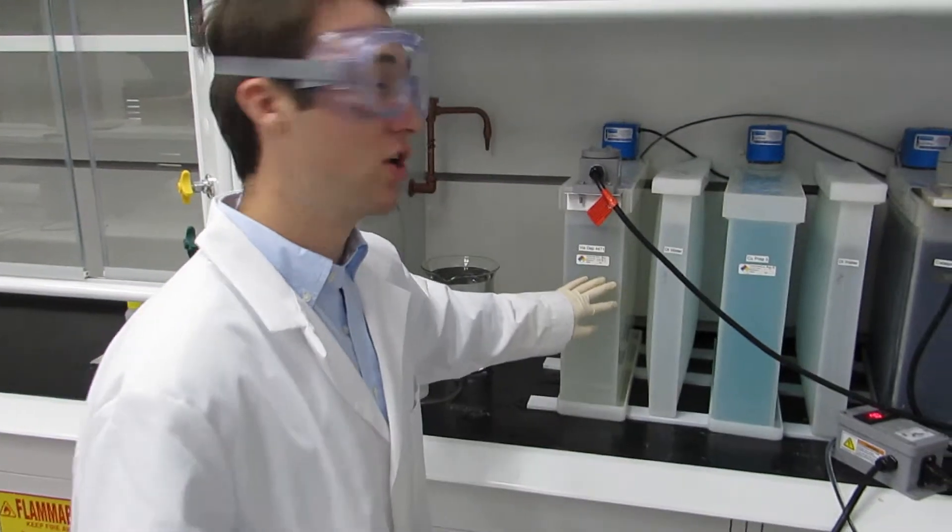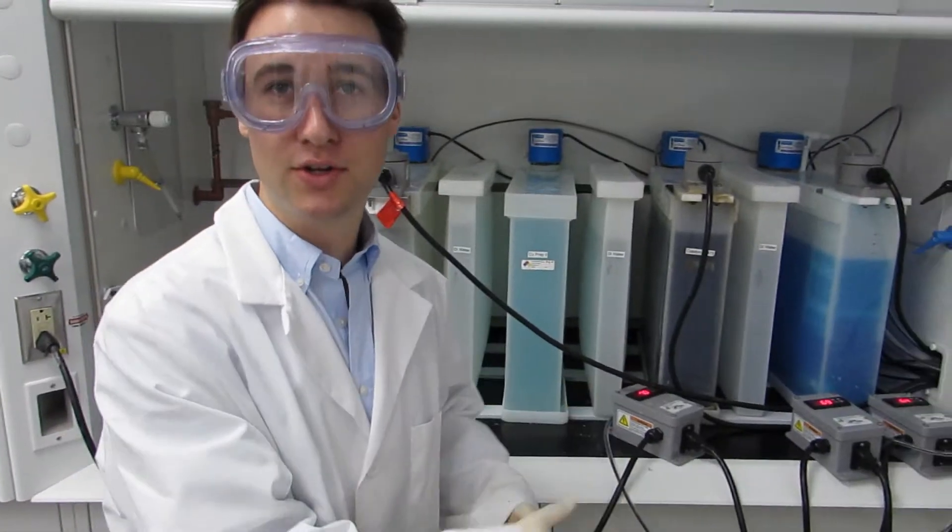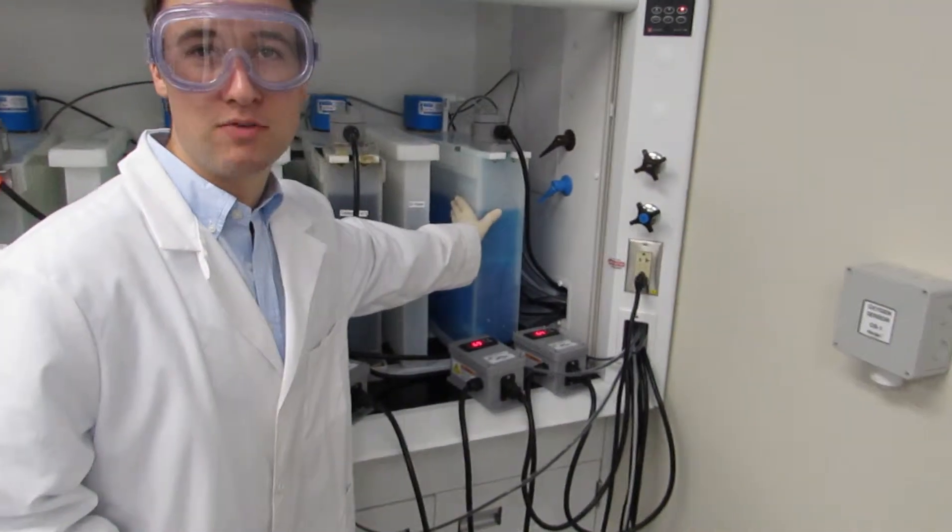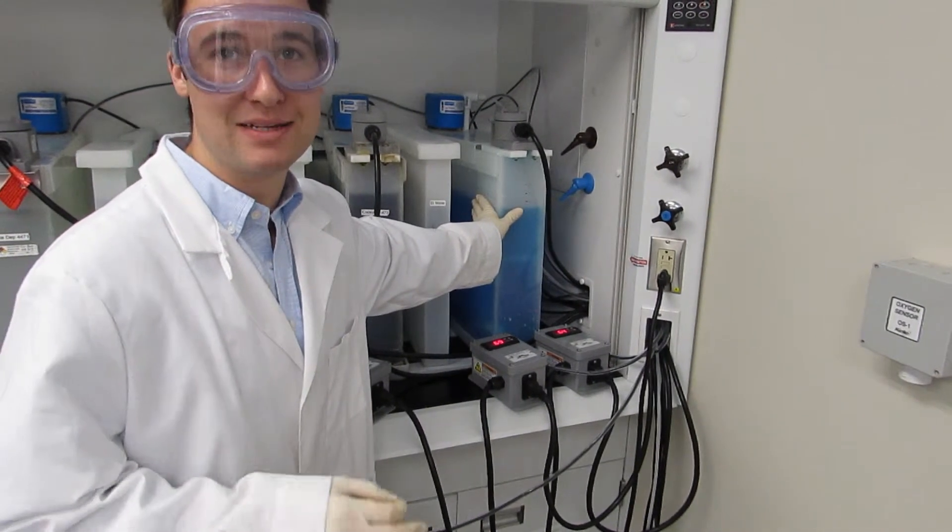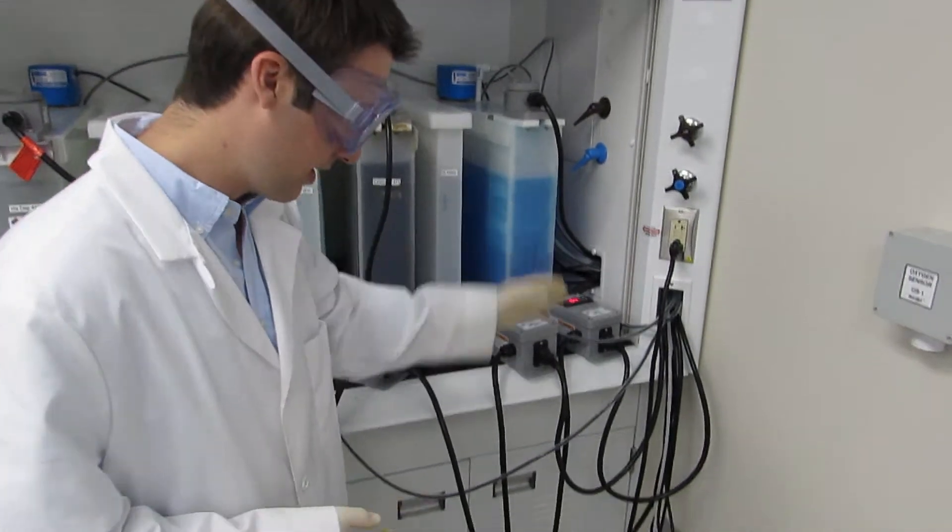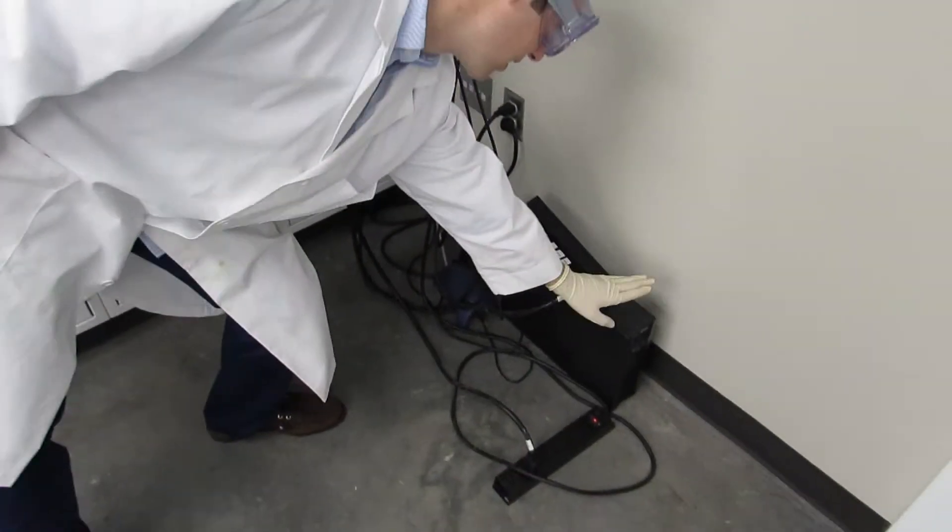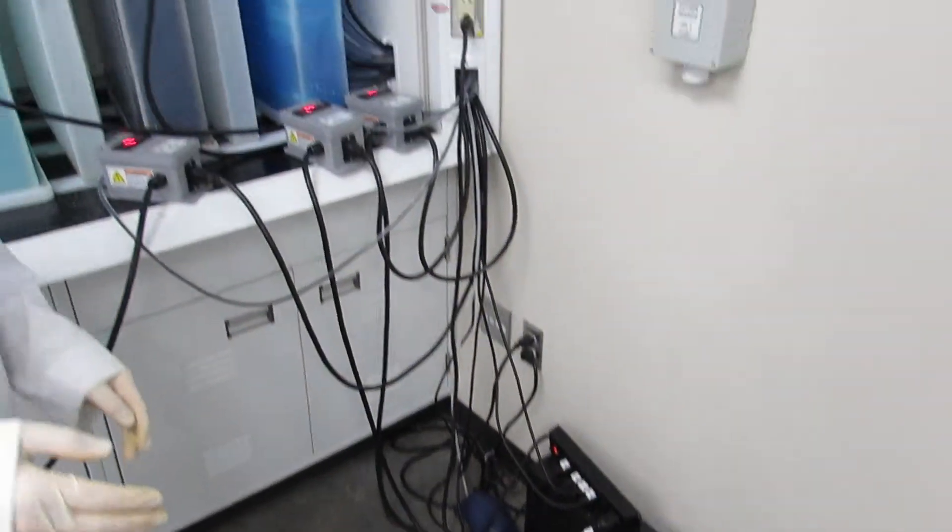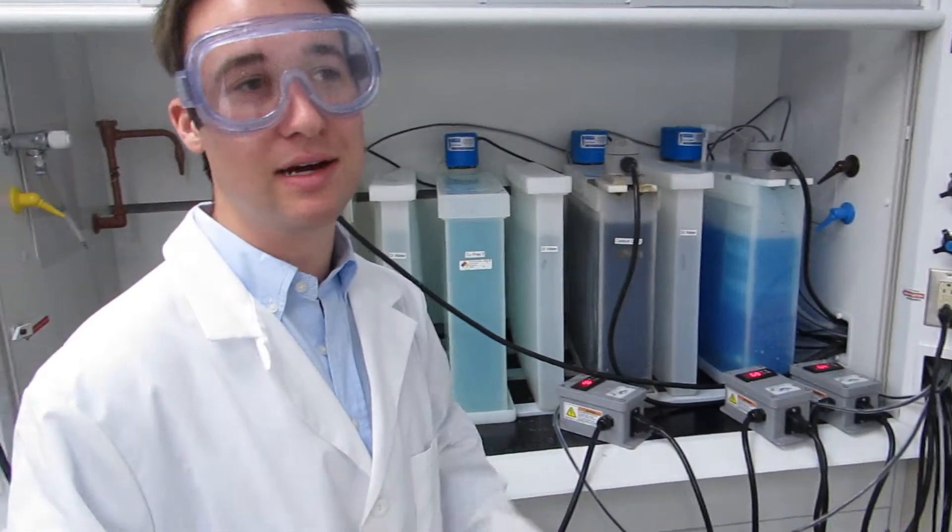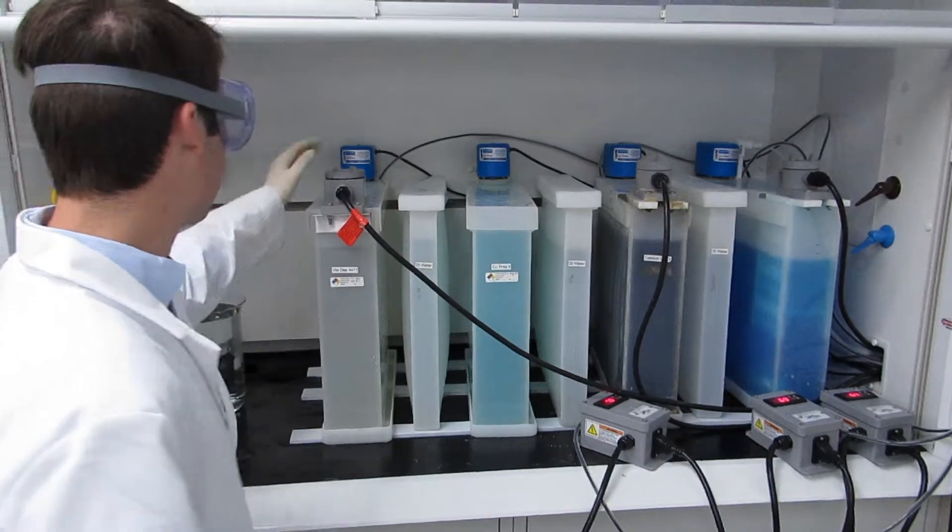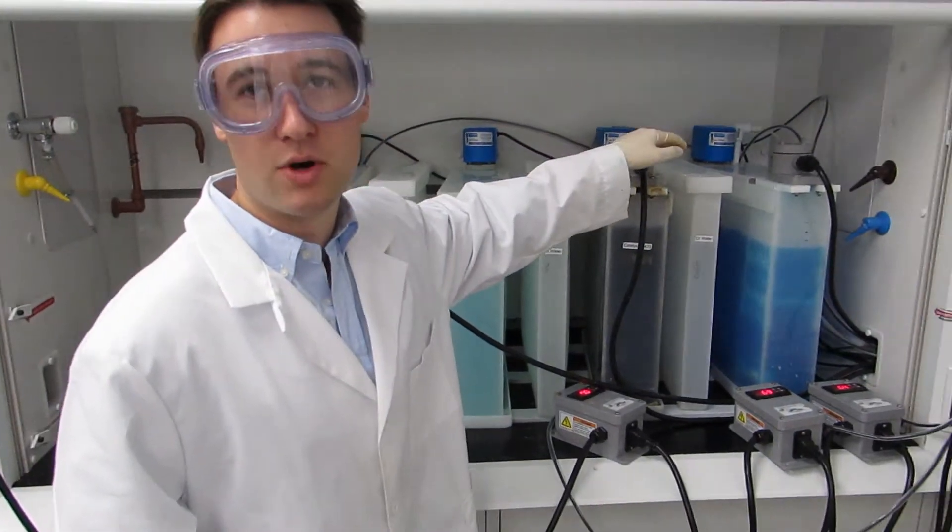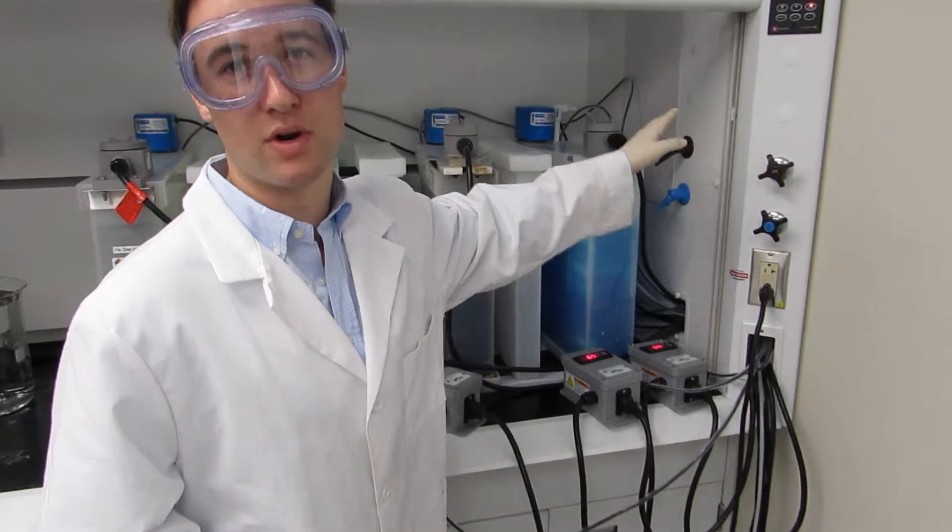So before you start you want to turn the filters on for all of them to circulate the content. For this blue one over here, the filter always stays on no matter what. We have it plugged in to a USB so that it always stays on. Then you want to put on the heaters. This one for the ViaDep will be set to 125, the one for the catalyst to 105 and this one to 125.